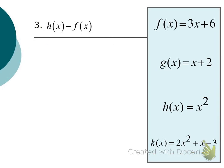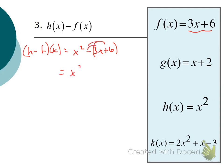For H of X minus F of X, we want H minus F of X. We start with H, which is X squared, and subtract the F function from it. When subtracting one function from another, we must subtract the entire function — so we put the second function in parentheses. We distribute the negative, getting minus 3X and minus 6. So X squared minus 3X minus 6. Subtraction is tricky: put the second function in parentheses and distribute that negative.